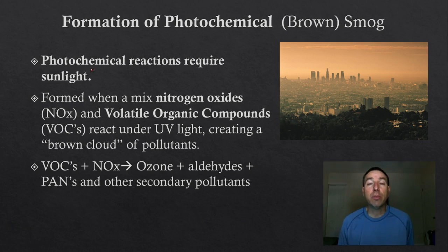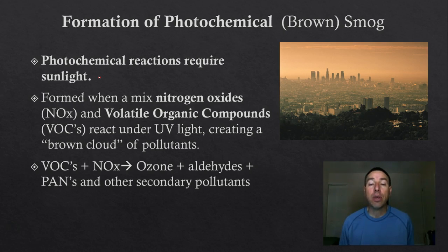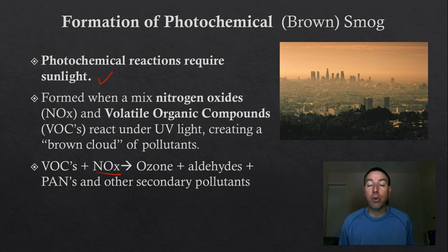First, photochemical smog, also known as brown smog. This smog is created when secondary and primary pollutants start interacting with sunlight — you must have sunlight for these reactions to occur. When nitrogen oxides and VOCs, or volatile organic compounds, react under UV light from the Sun, they start creating this brown cloud.